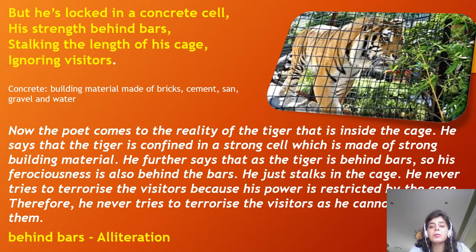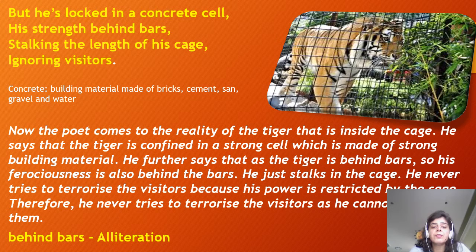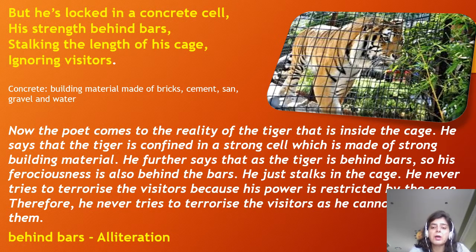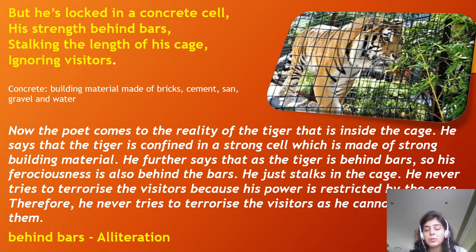The poet now comes to the reality of the tiger inside the cage. He says the tiger is confined in a strong cell made of strong building material. He further says that as the tiger is behind the bars, his ferociousness is also behind the bars. He just stalks in the cage and never tries to terrorize the visitors because his power is restricted by the cage — he is confined within the walls.